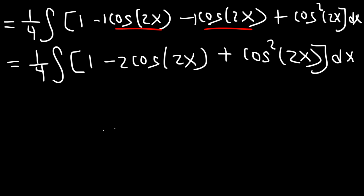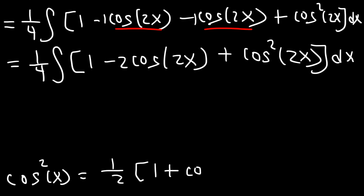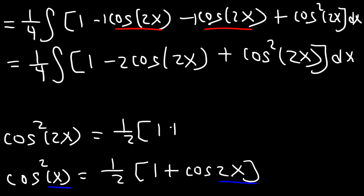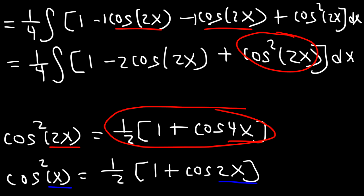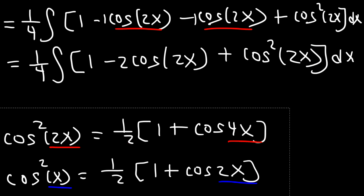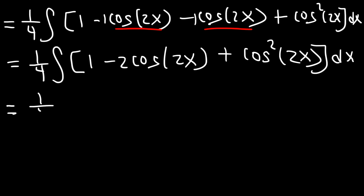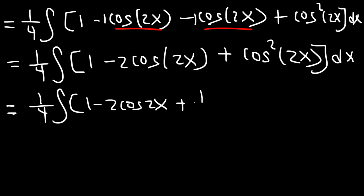We used it for sine squared, but now let's focus on cosine squared. Cosine squared of x is one half times (1 plus cosine 2x). As before, the angle doubles from x to 2x. This time we're dealing with cosine squared 2x, so the angle doubles from 2x to 4x — that's important to be careful with. So we replace cosine squared 2x with one half times (1 plus cosine 4x).